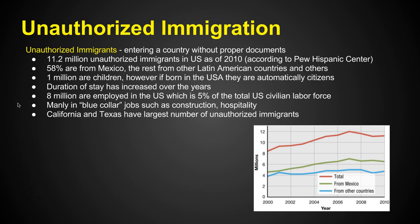The duration of stay of immigrants has increased — they don't just work for a little bit and go back; more and more they just stay. Eight million of these unauthorized immigrants are employed in the US, making up 5% of the total US civilian labor force. These immigrants work mainly in blue-collar jobs such as construction and hospitality — jobs that people in this country typically don't want, as they traditionally go for teachers, lawyers, doctors, and technicians.